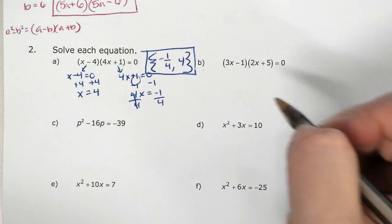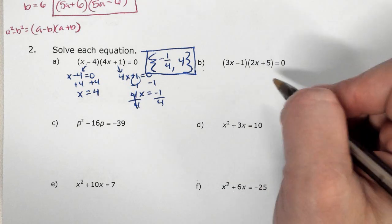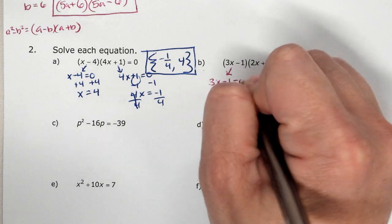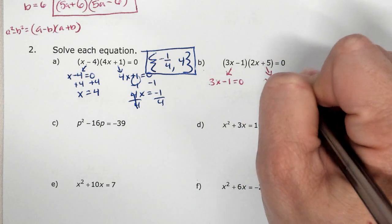Okay, so b, same concept. We have it already factored, so zero factor property, we separate. And solve.